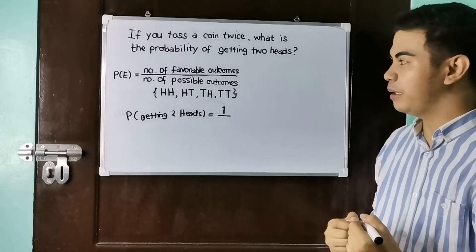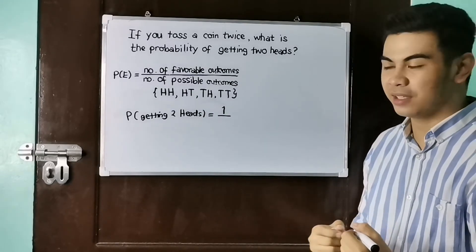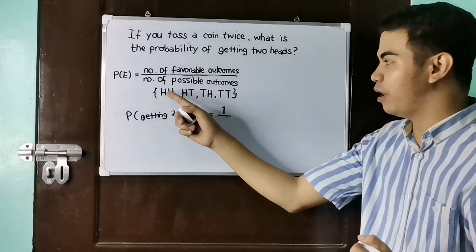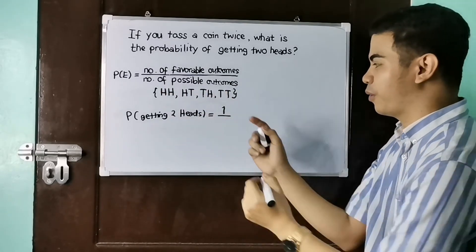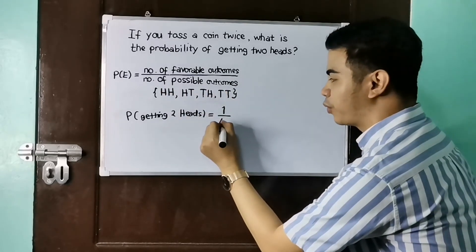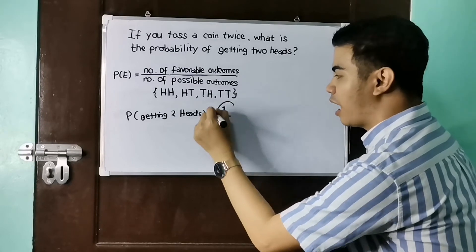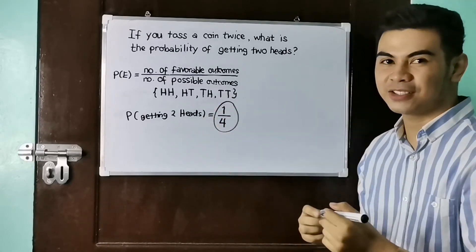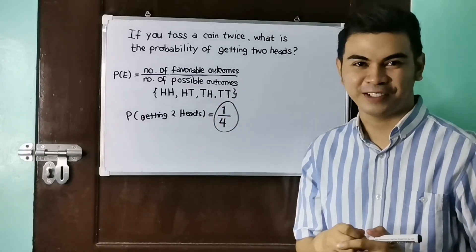How many possible outcomes are there? We have here one, two, three, four. So our final answer is one-fourths.